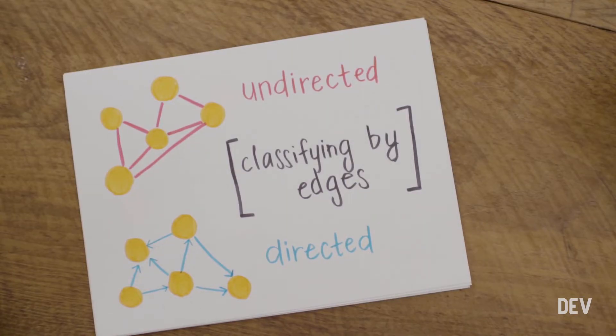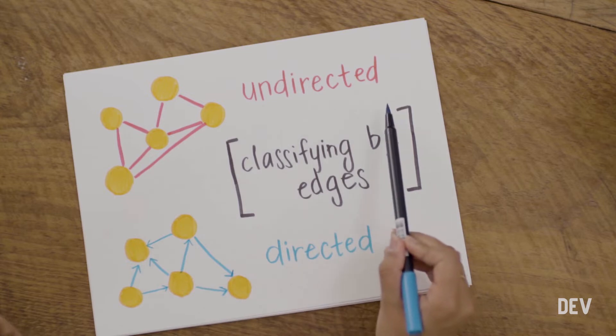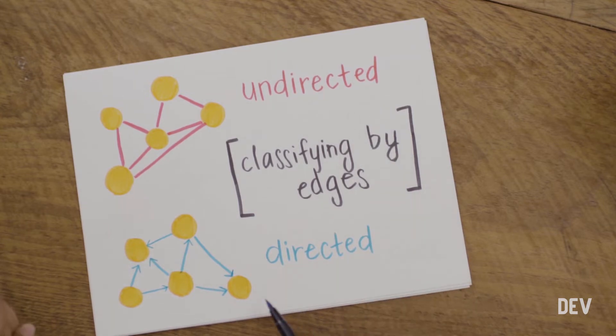A graph is a data structure that's made up of two parts. We have nodes, which are also called vertices, and edges, which are also called links. The edges connect the vertices that make up the graph. There are also some different ways of classifying graphs themselves. We can classify a graph by looking at the types of edges that it has. A graph with edges that have no directionality to them is called an undirected graph, in contrast to a directed graph, which has edges that do have some directionality.